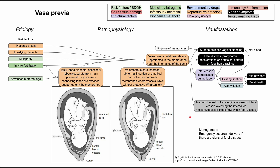Regarding management, the short of it is that you want to do an emergency C-section if there are significant signs of fetal distress. If you notice the fetal vessels are being compressed during labor and you have significant bradycardia, decelerations, or a sinusoidal heart tracing, go ahead and perform an emergency C-section — you don't risk doing a vaginal delivery in this case. That's it for vasa previa, and thank you for listening.